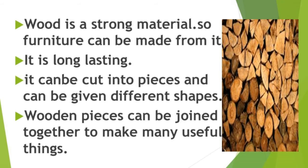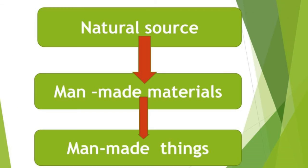Wooden pieces can be joined together to make many useful things. So the process is: from a natural source, man makes materials, and from those materials, man makes things.